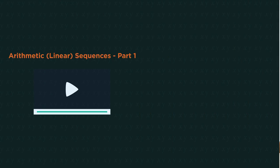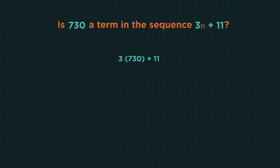How do we answer this question? 730 isn't the term so we can't put it in place of the nth. We have to make the nth term rule equal to 730.